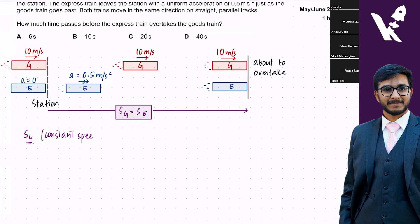We will be able to use the formula speed equals distance upon time. It's a goods train with constant speed. The speed was 10, distance traveled was SG, time is T.